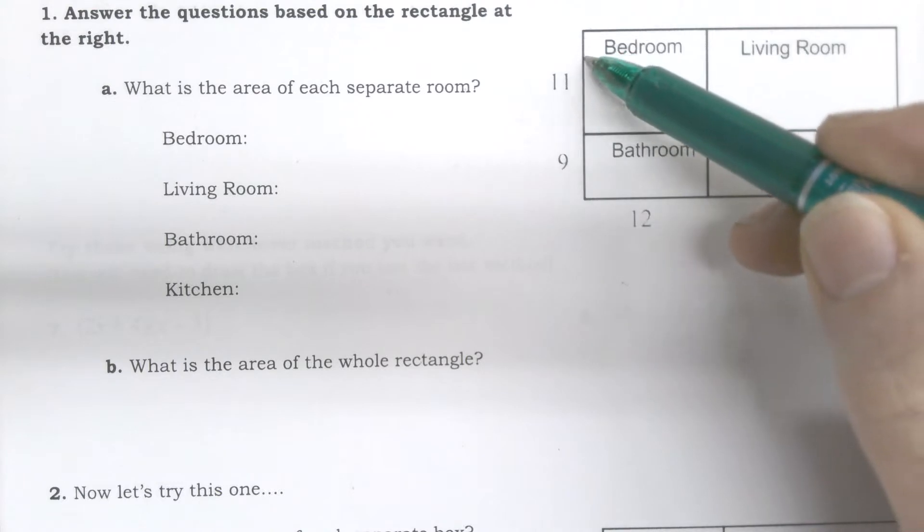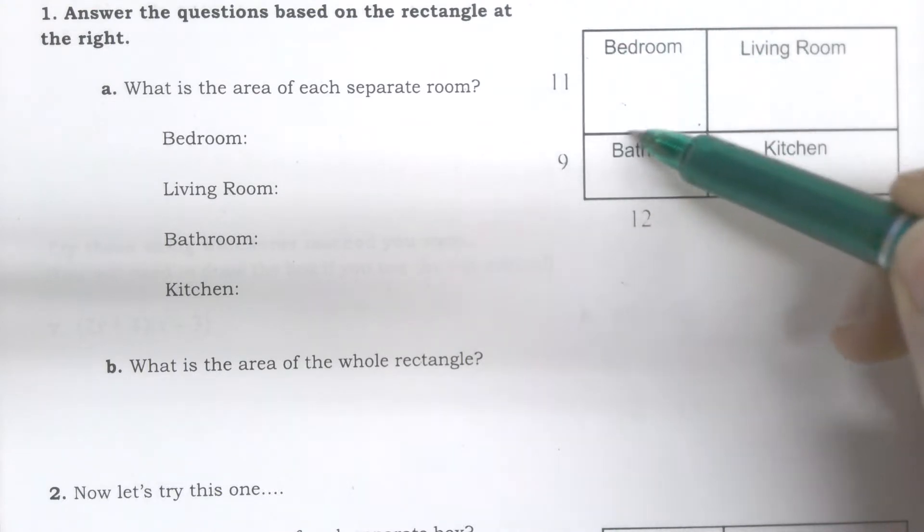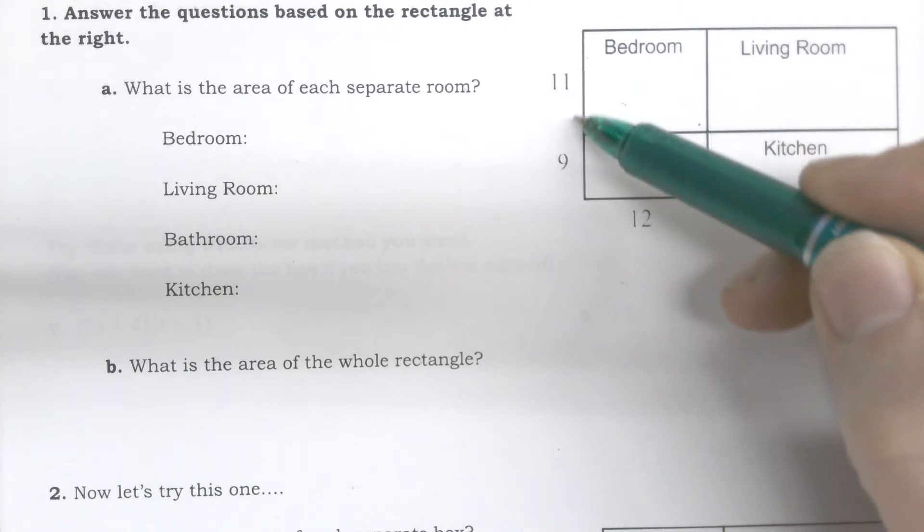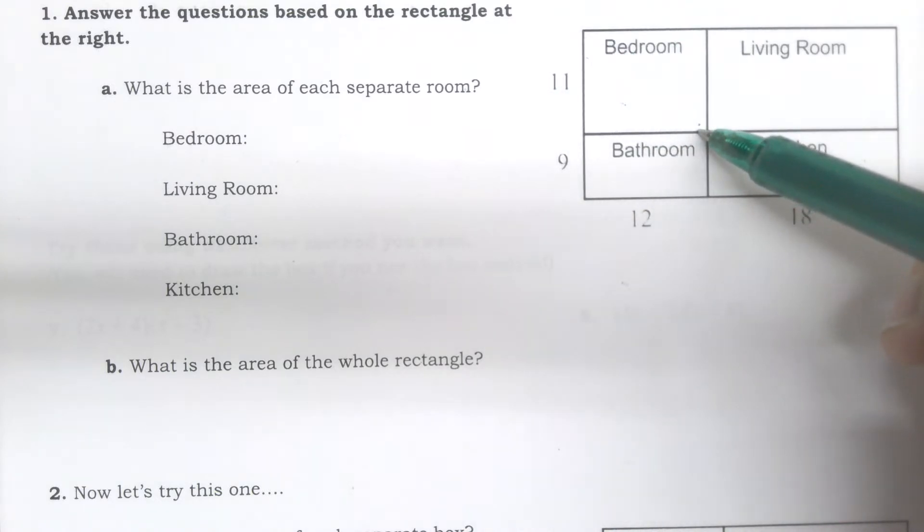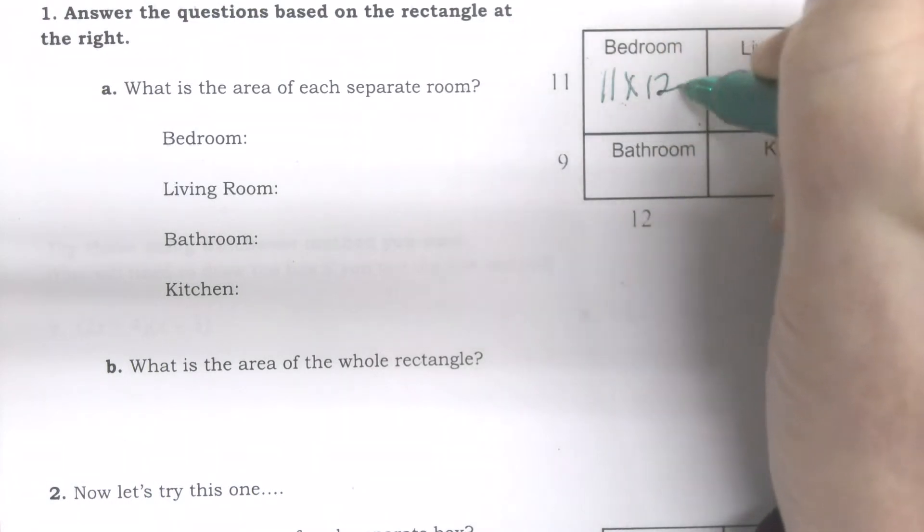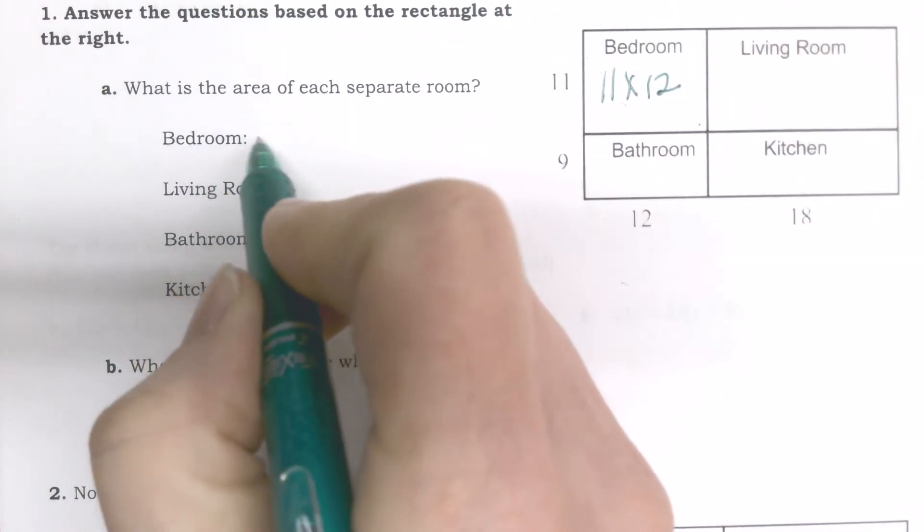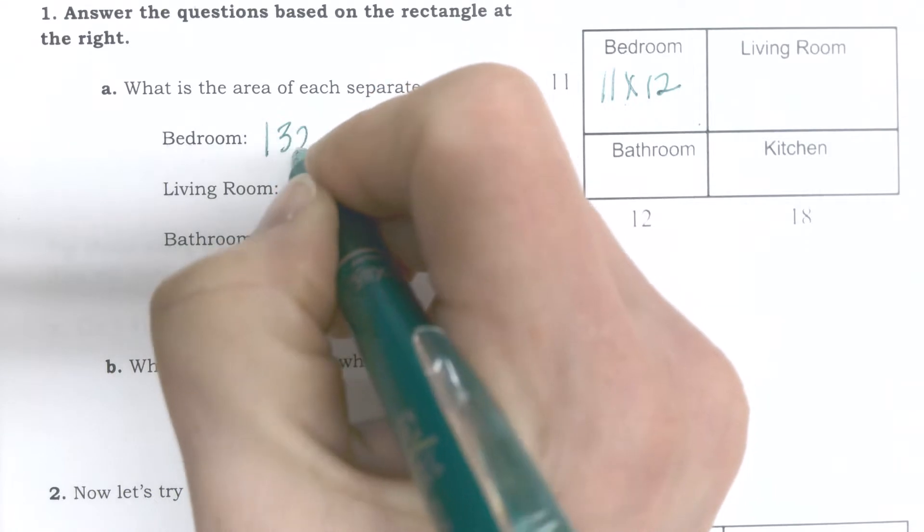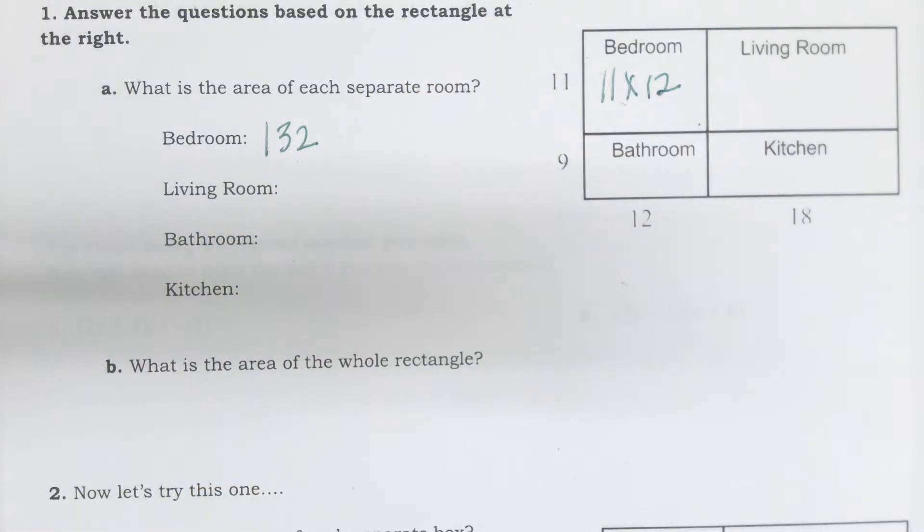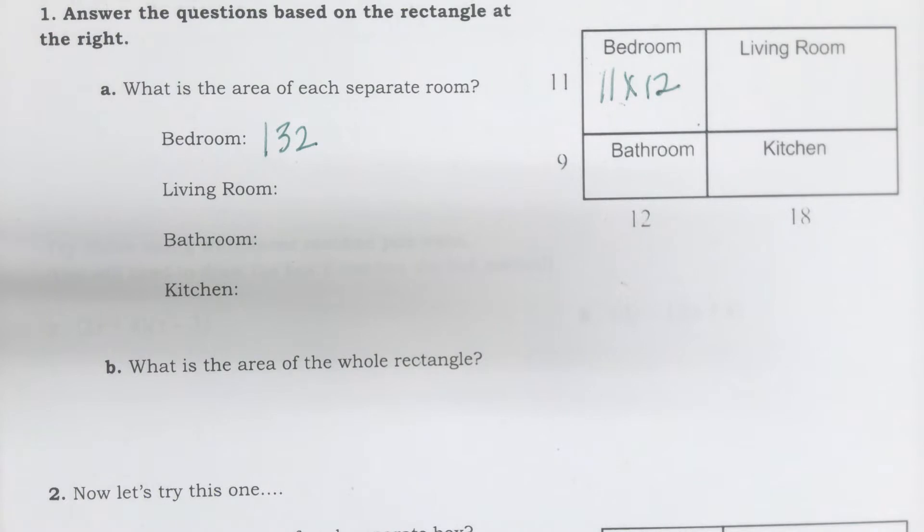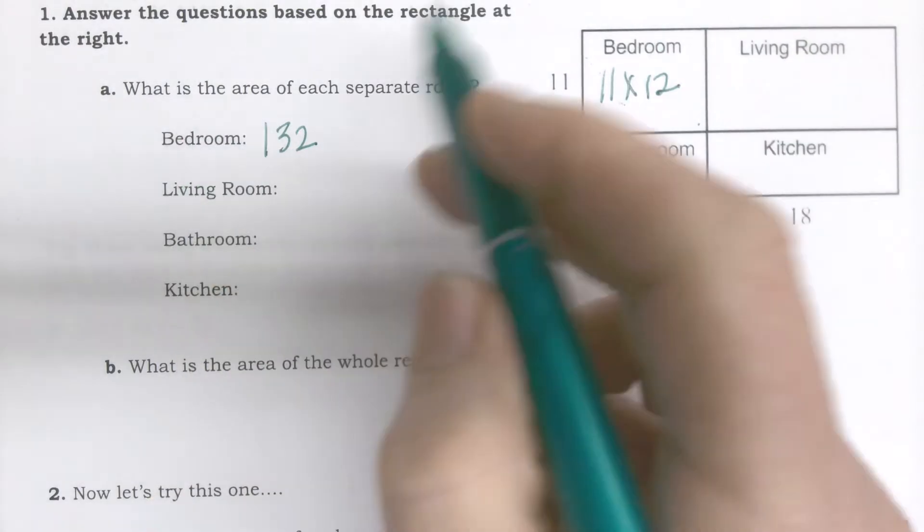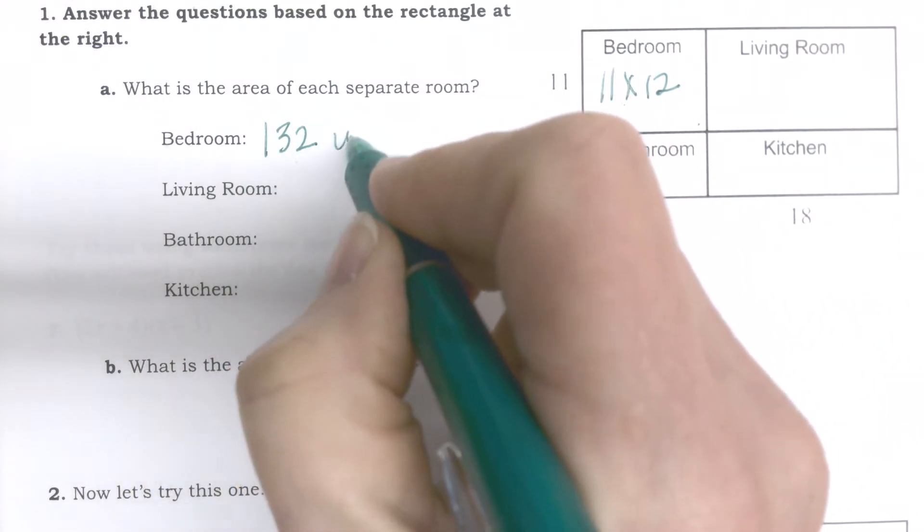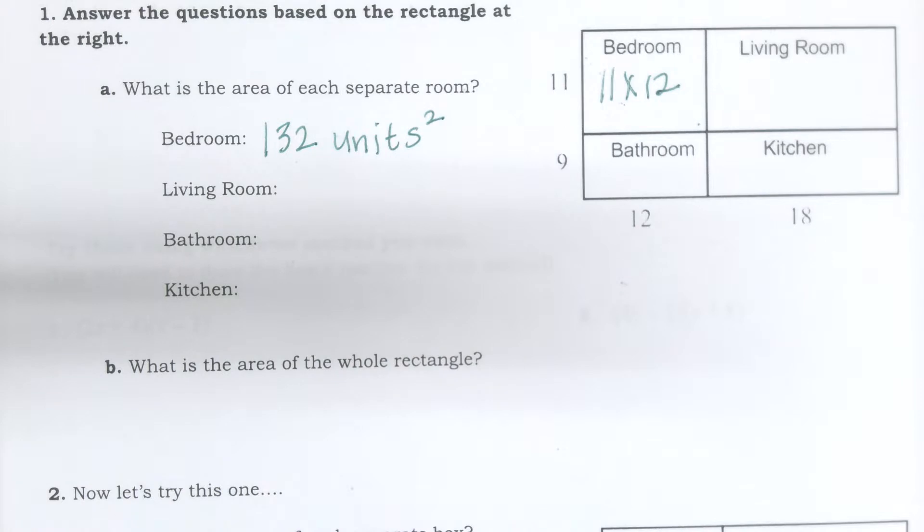If I'm trying to figure out the area of the bedroom, I would do 11 times 12. To figure out that area, multiply those things together. The area of my bedroom is 11 times 12. If you plug that in your calculator, it's 132 units squared.